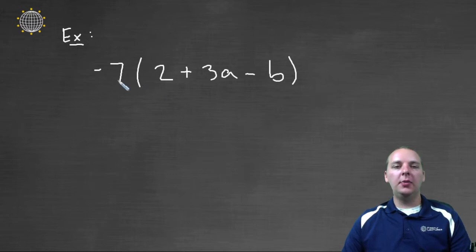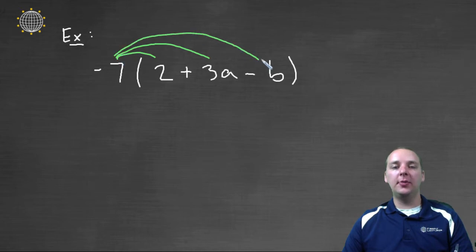Alright, here we have a distributive property with three terms. So we have negative seven times the quantity two plus three a minus b. So what we'll do is we'll take this negative seven and we'll distribute it to the first, the second, and the third term. And that's totally allowed, you're totally allowed to do that.